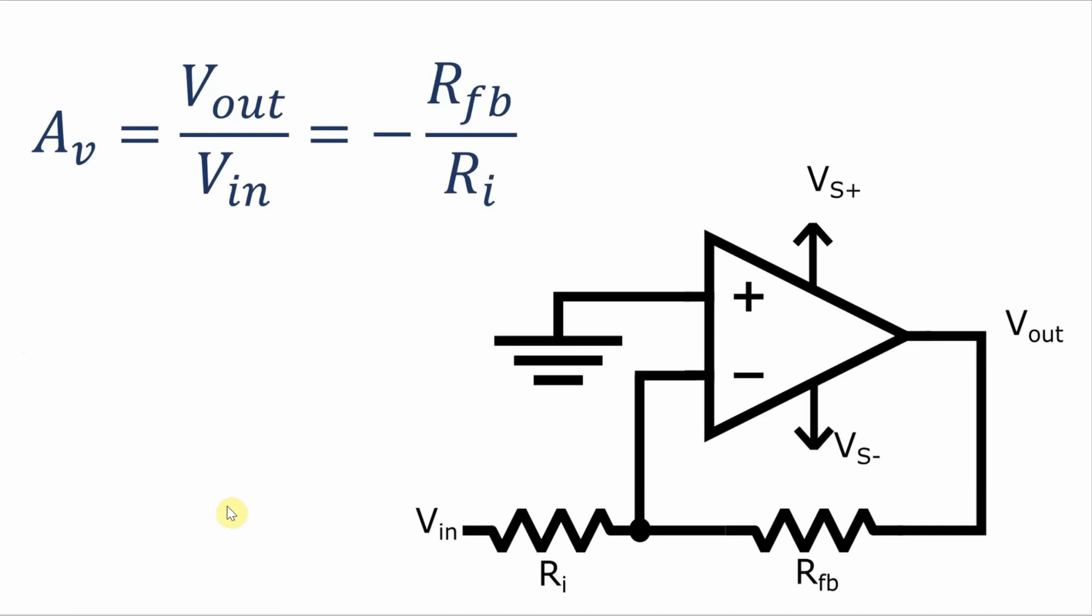If the op-amp is an ideal one or pretty near to ideal then the voltage gain of an inverting amplifier circuit is negative of the ratio of the feedback resistor over the input resistor. And I'm going to spend a bit of time here showing you two different ways to derive this equation.